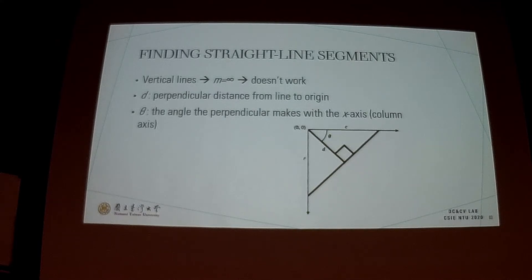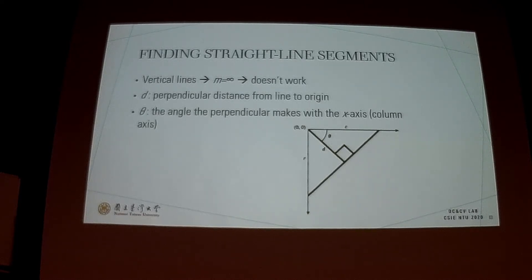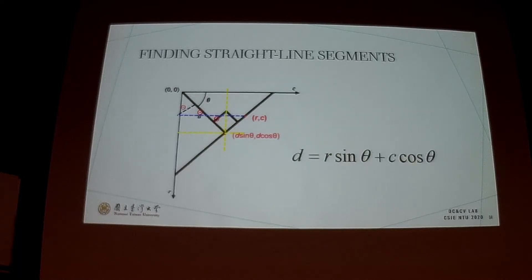For finding the straight line segment, vertical lines where m is infinite do not work with the standard form. There is another parameter d, which is the perpendicular distance from the line to the origin, and theta, the angle the perpendicular makes with the x-axis. Using this alternative equation, we can estimate the line segment.